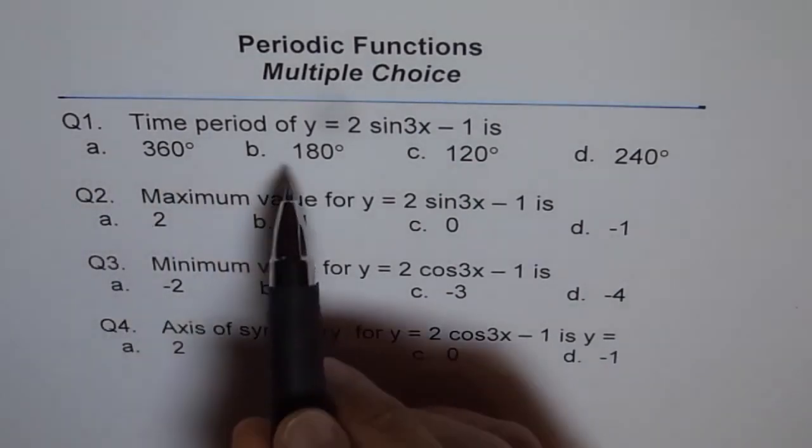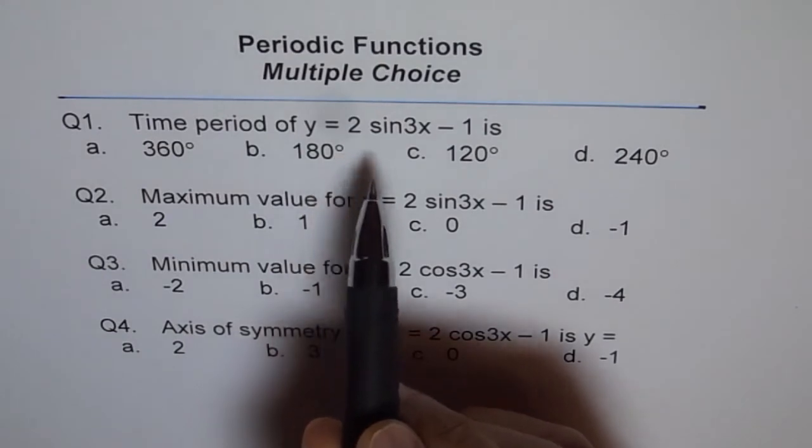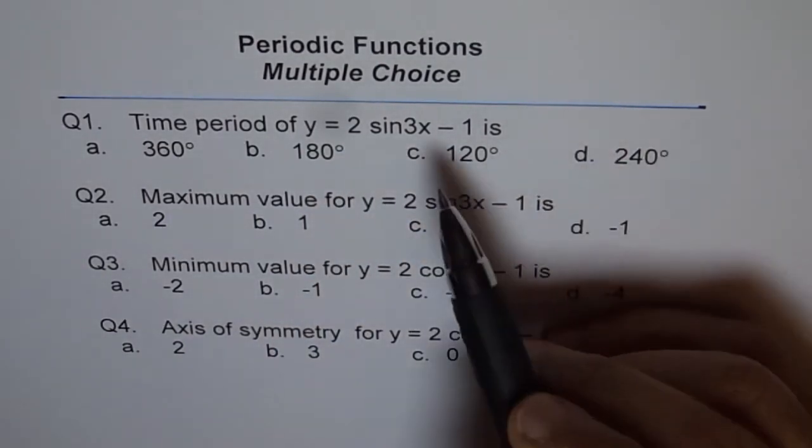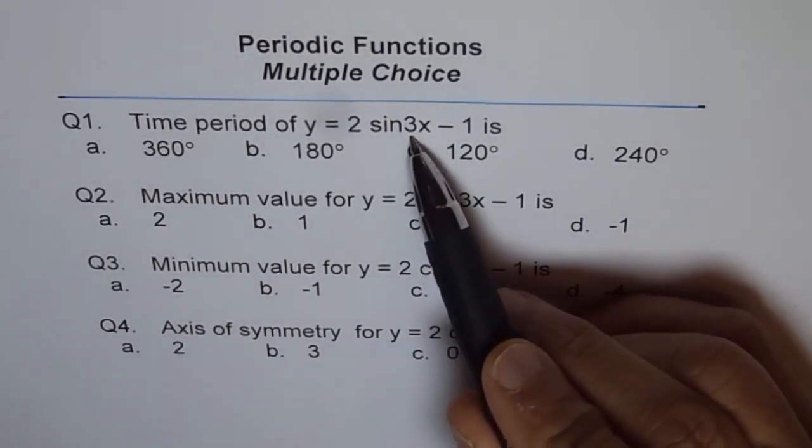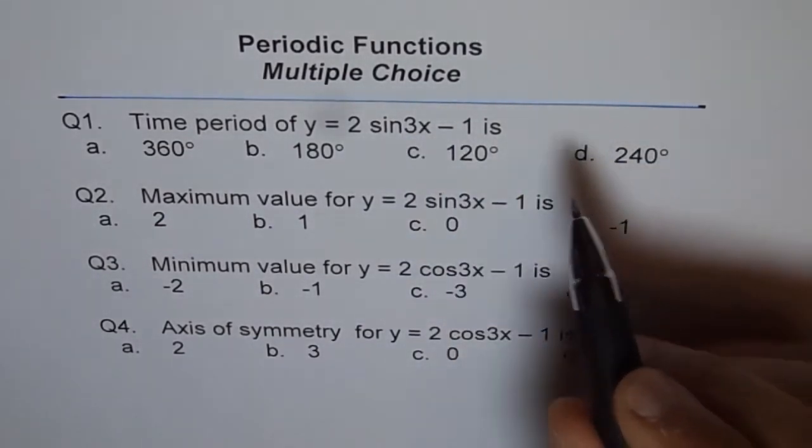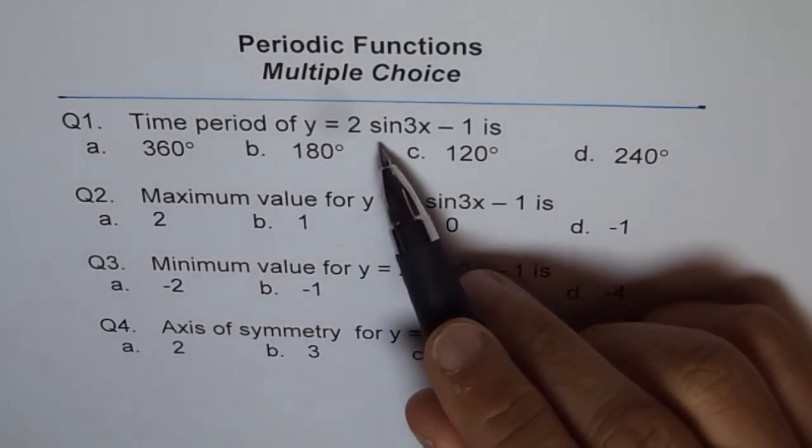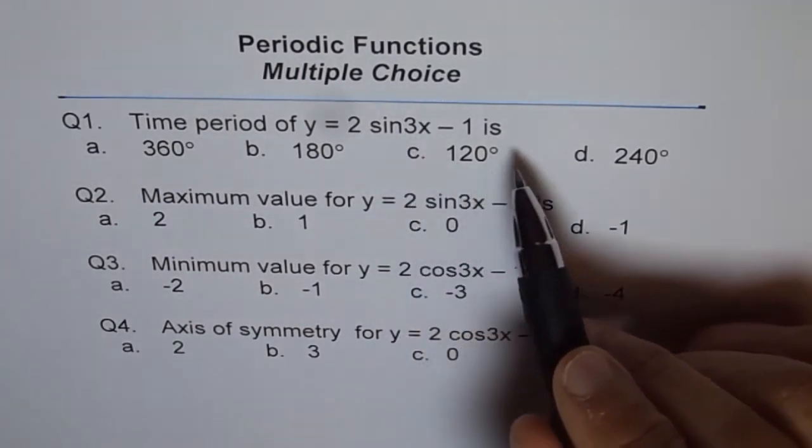Time period of y = 2 sin 3x − 1. Now time period is decided by k, this value 3. Normal time period of sin x is 360°, and for sin 3x we have 3 sin waves within 360°.